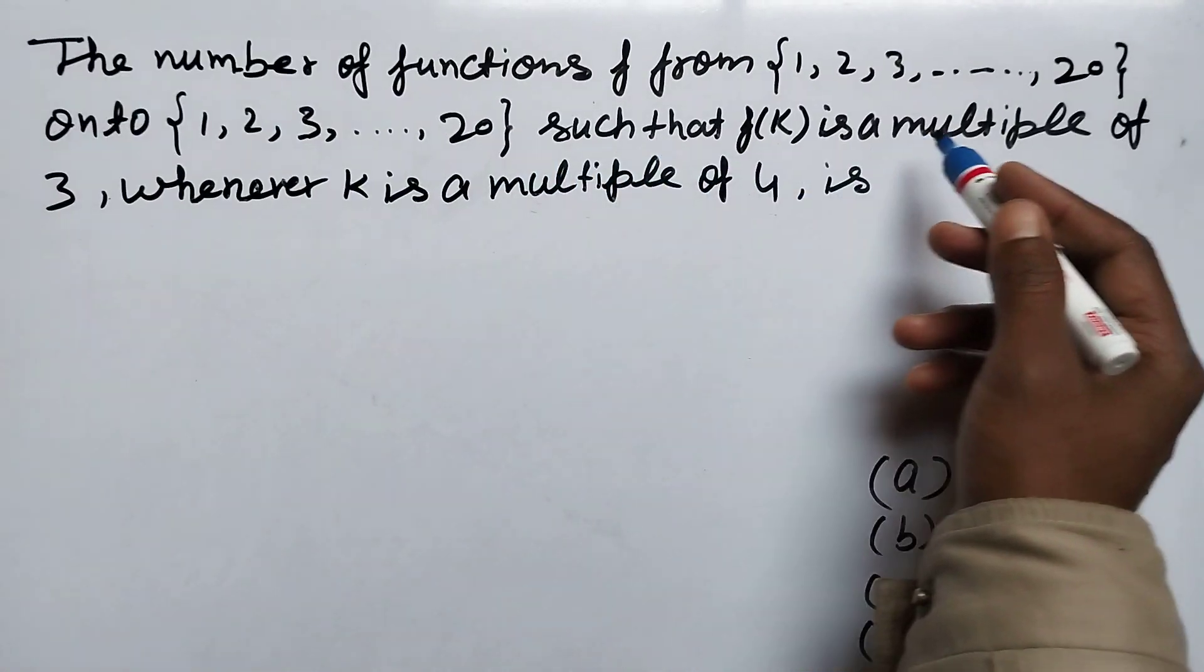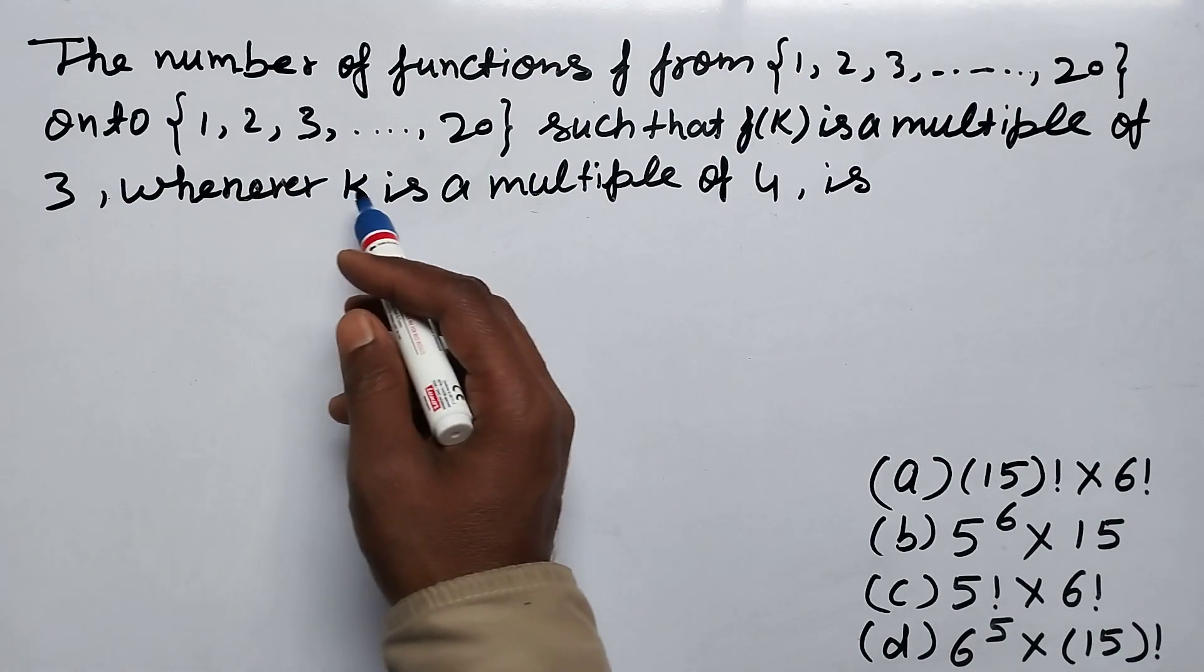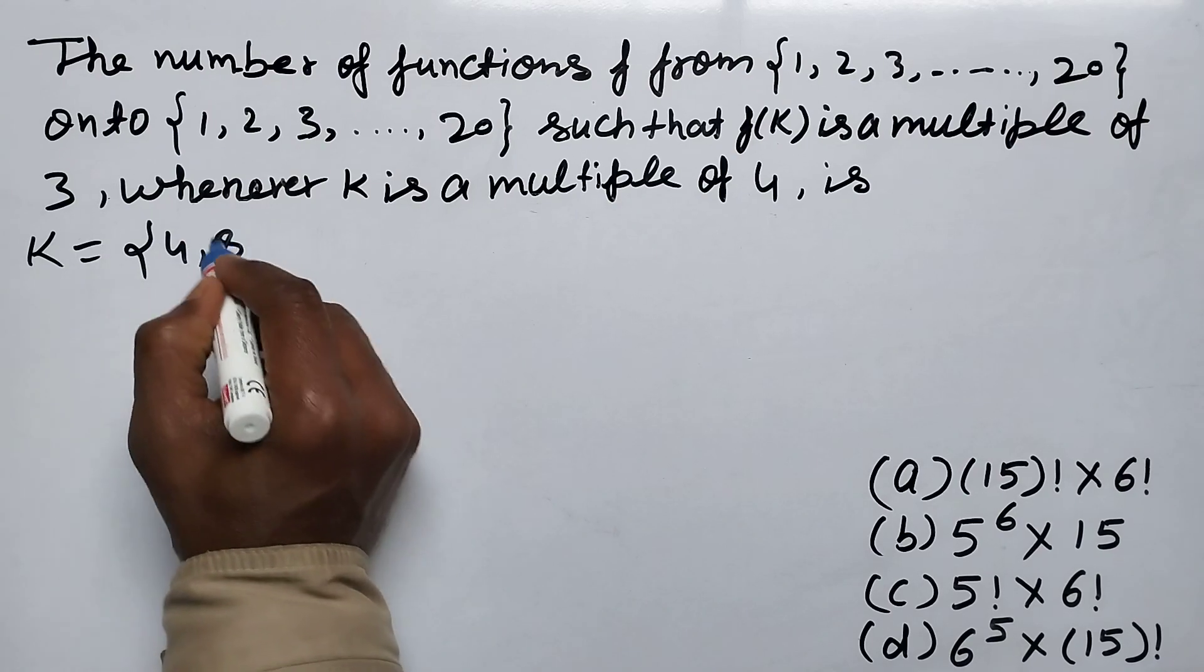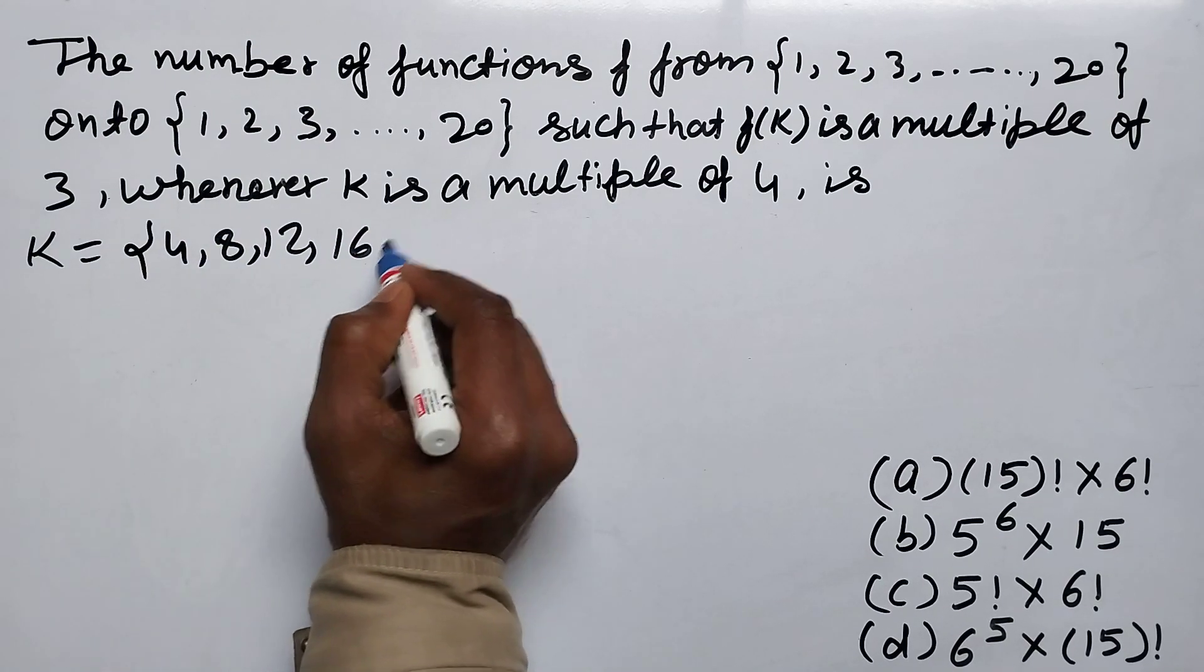such that f(k) is a multiple of 3 whenever k is a multiple of 4. k equals 4, 8, 12, 16, 20,